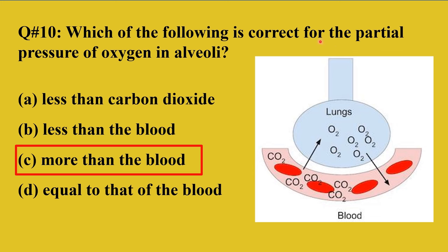From the environment, we inhale oxygen into the lungs, so the partial pressure of oxygen in the lungs is higher compared to the bloodstream. That is why oxygen diffuses out into the blood capillaries and from there is taken to the tissues of the body.